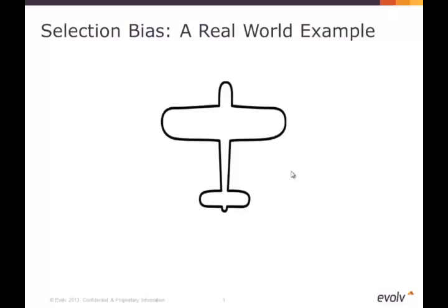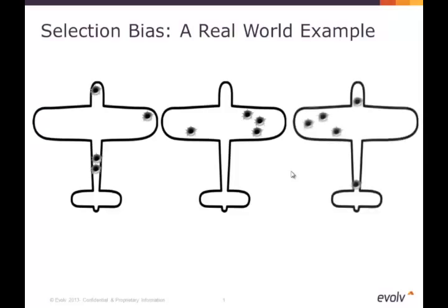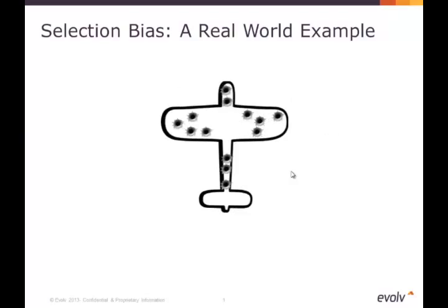Now, the armor was heavy and expensive, so they decided that they'd only add it to the parts of the plane that were most critical. Luckily, when planes returned from their bombing runs, they kept meticulous records of where they had been shot, so they were able to take all of these diagrams and superimpose them in order to get a good sense of where the planes were being hit by German anti-aircraft fire.